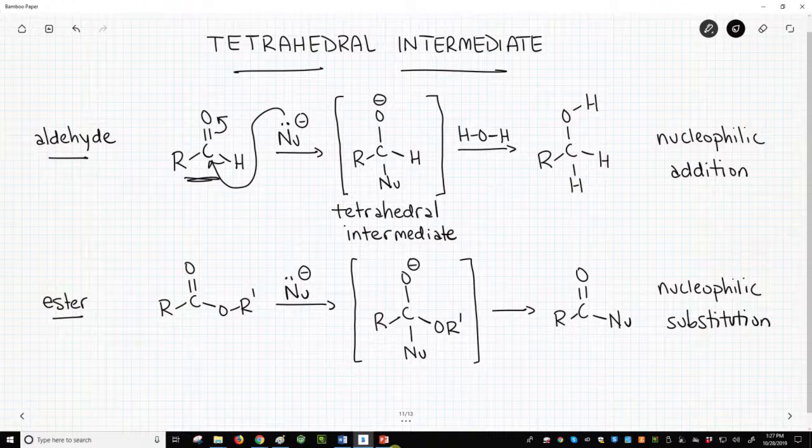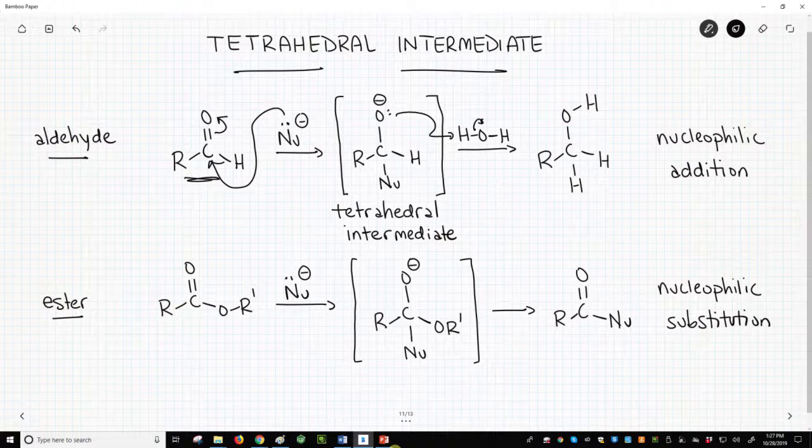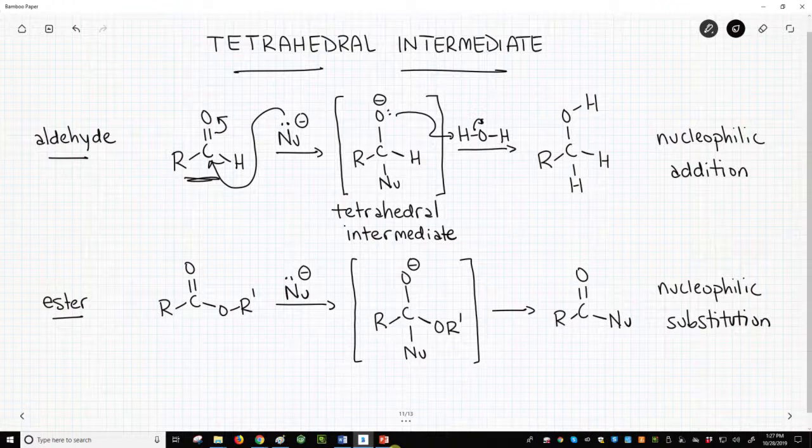This intermediate doesn't have much it can do, so it will remain in the reaction solution until we add a proton source, often water. We then protonate the O- to get an alcohol. We've broken a pi bond and performed a nucleophilic addition. We've added a nucleophile.